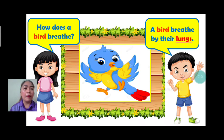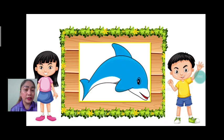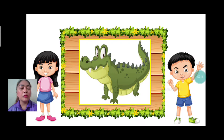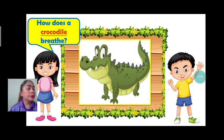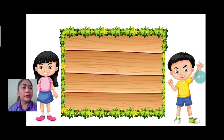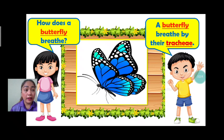Next we have bird. How does a bird breathe? A bird breathes by their gills. Again: a bird breathes by their gills. Good job. Next, what animal is it? Dolphin. How does a dolphin breathe? A dolphin breathes by their gills. Next we have butterfly. How does a butterfly breathe? A butterfly breathes by their trachea. Good job. Yay!